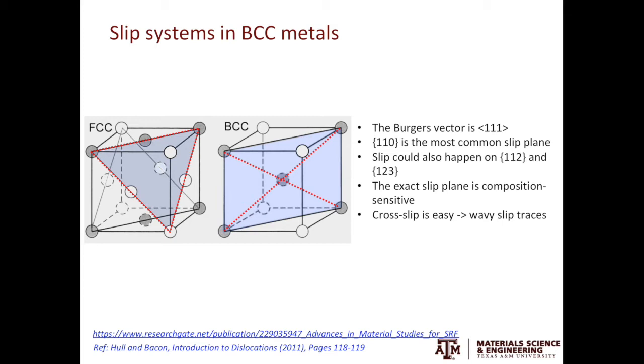The exact slip plane is composition sensitive. For example, in pure iron, dislocations can glide on {110} and {112} planes, but in iron-silicon alloy, most dislocations are restricted to the {110} plane.